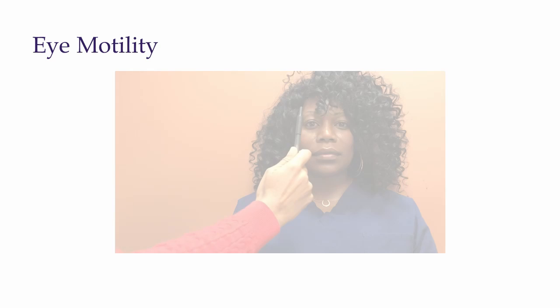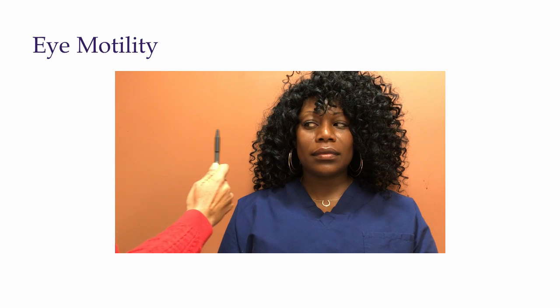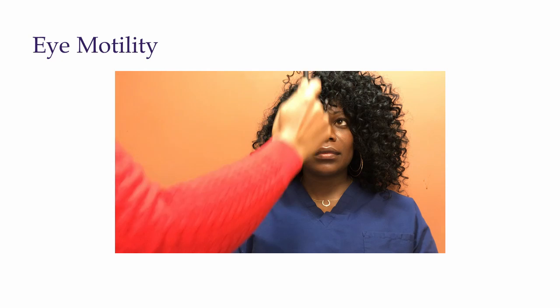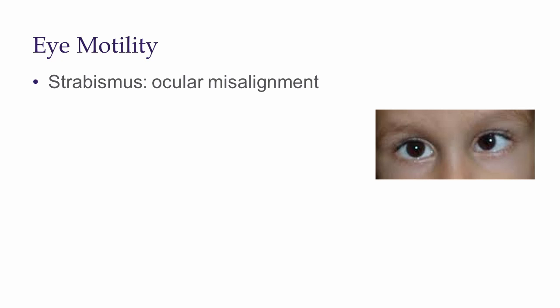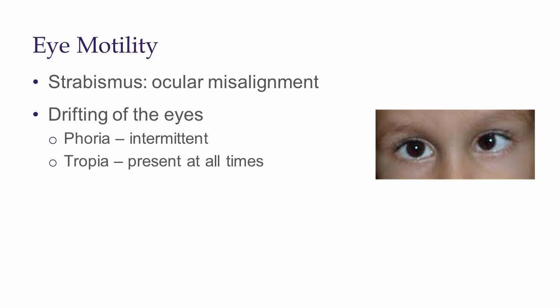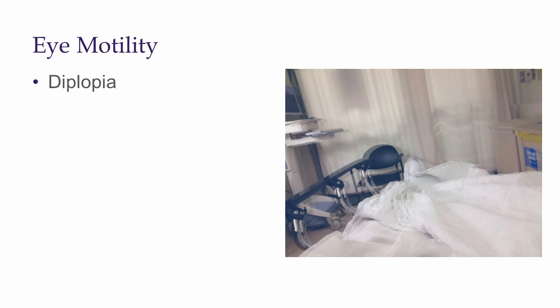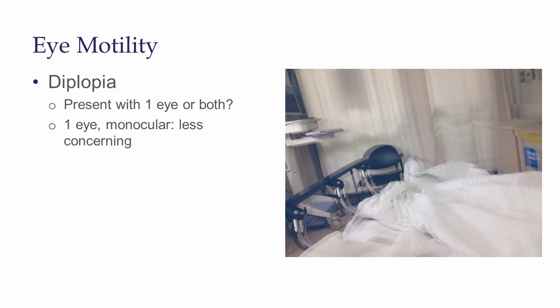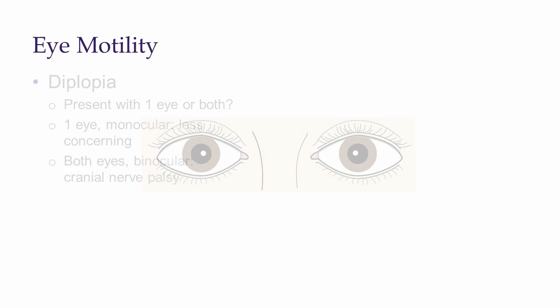After checking the pupils, we will test eye motility. Ask the patient to follow your fingers without moving their head — you are looking to make sure that the eyes move well in all directions of gaze. Patients may report a history of ocular misalignment since childhood, known as strabismus, or intermittent drifting of their eyes, especially when tired or ill. These chronic, non-life-threatening disorders of ocular motility are called phorias when intermittent and tropias when present all the time. If someone presents with acute double vision or diplopia, first assess whether it is present with only one eye open or with both eyes open. If present with one eye open, this decreases your concern for a vision- or life-threatening condition. If double vision is present when both eyes are open, it is concerning for cranial nerve palsy.